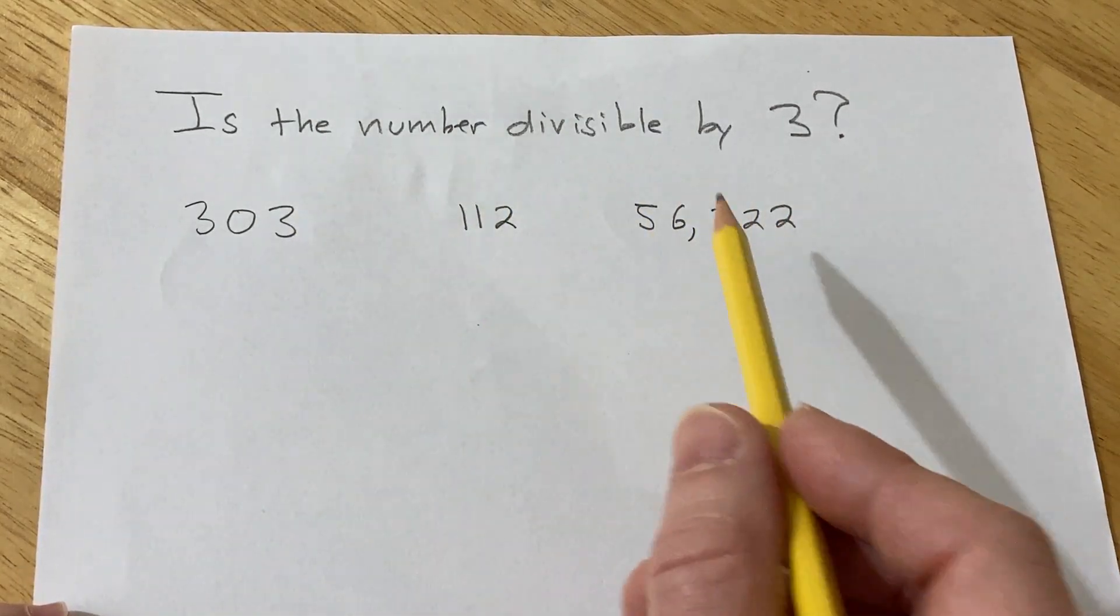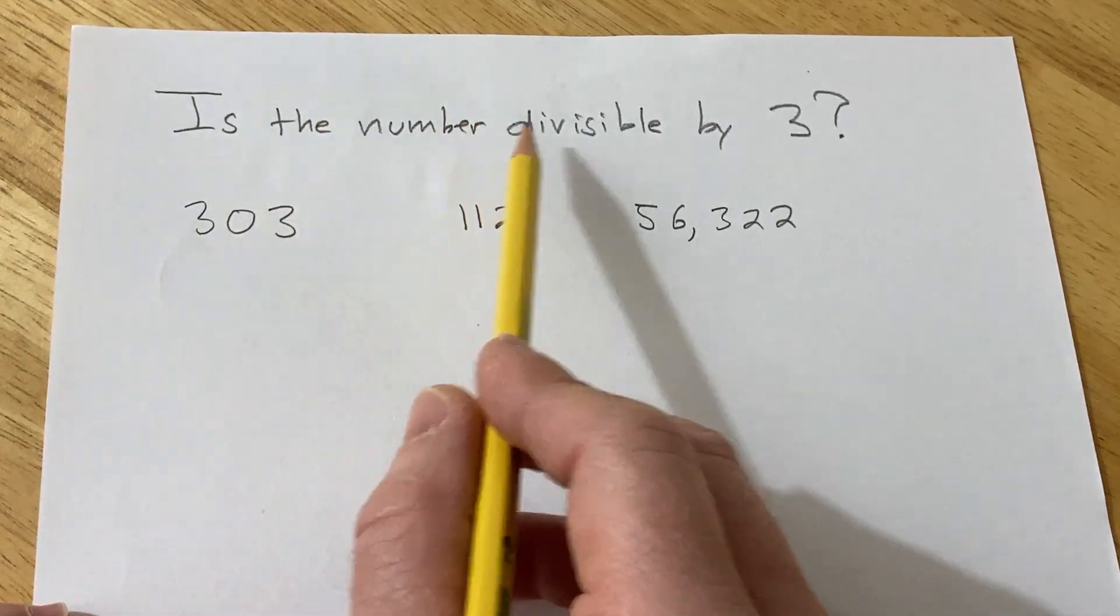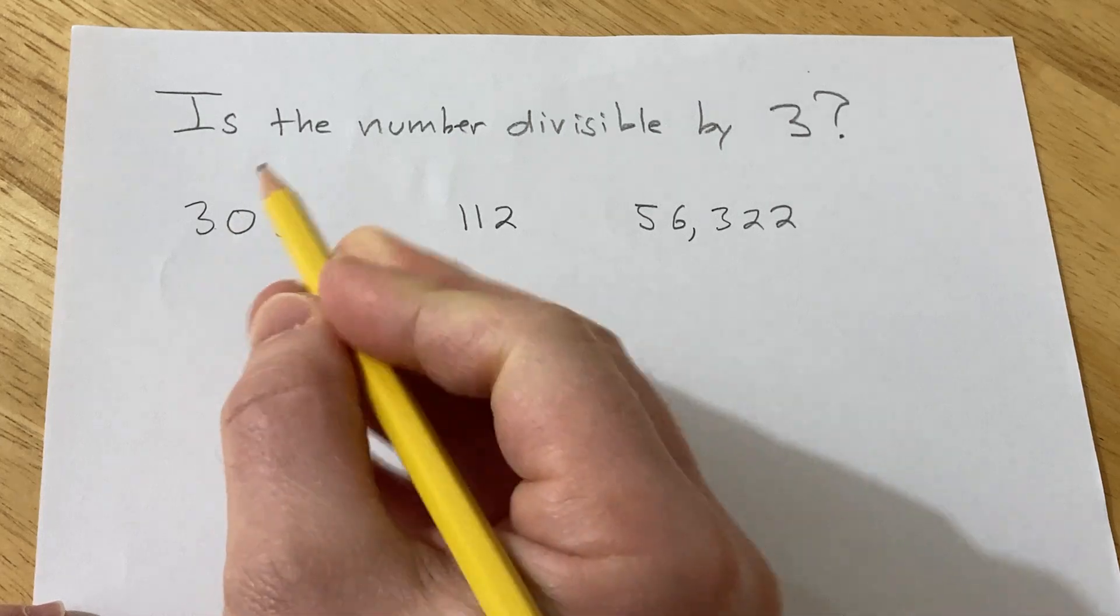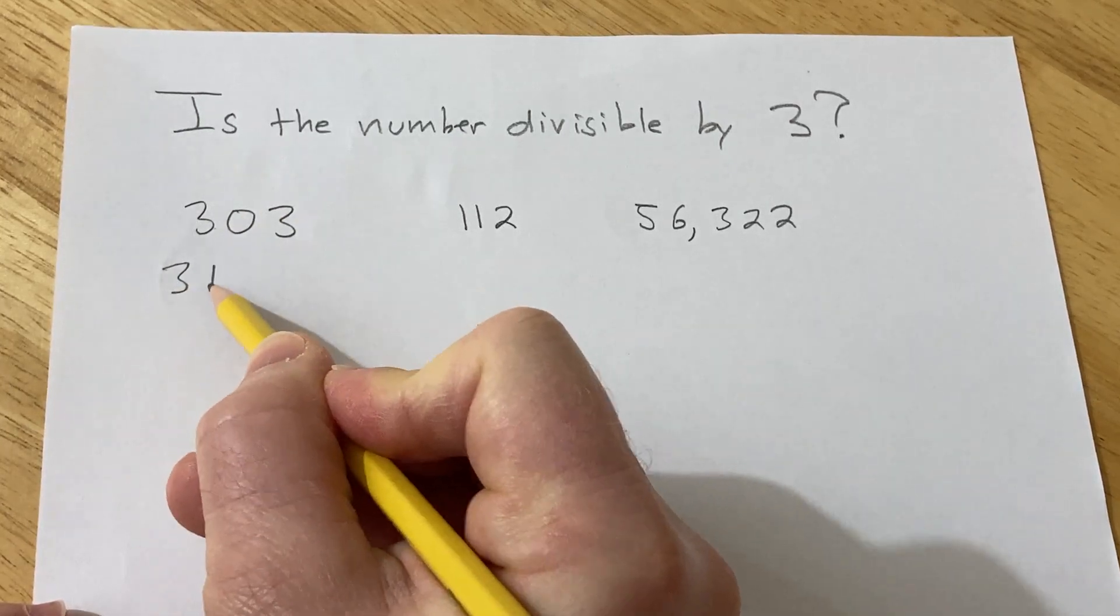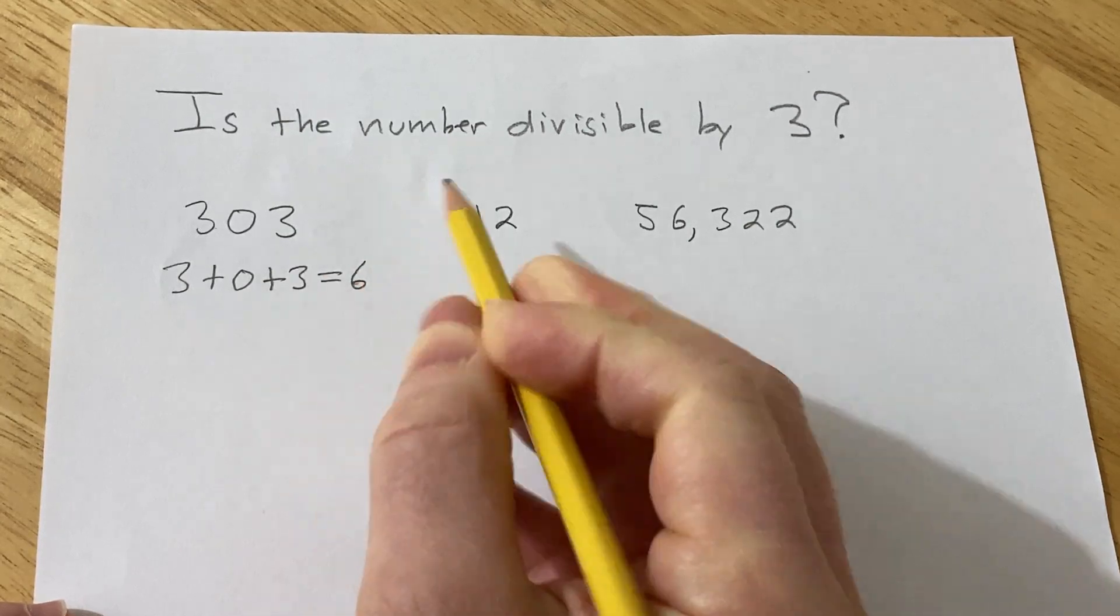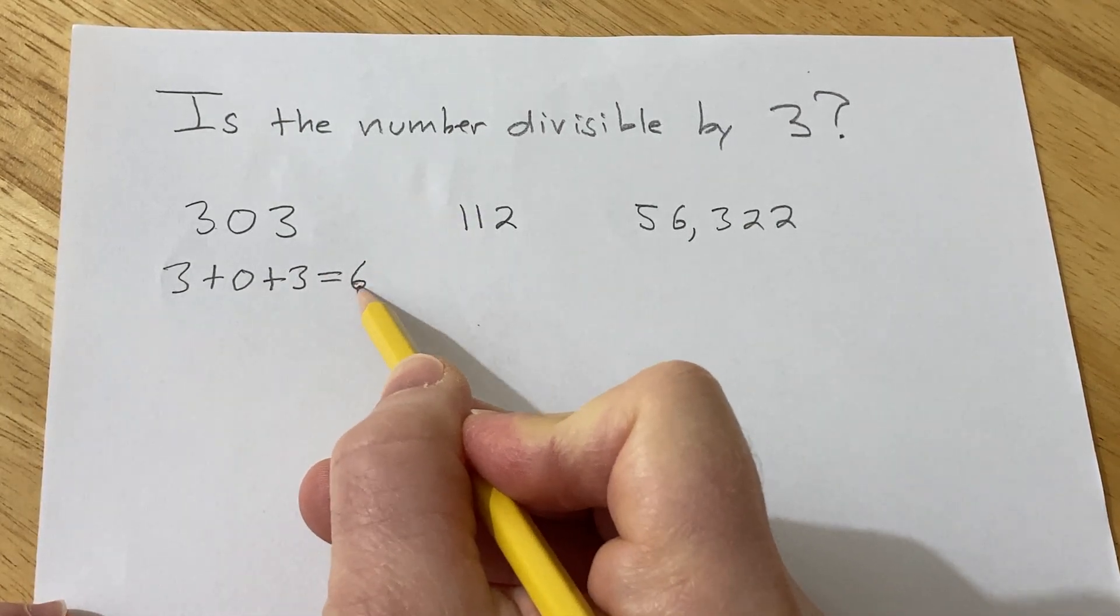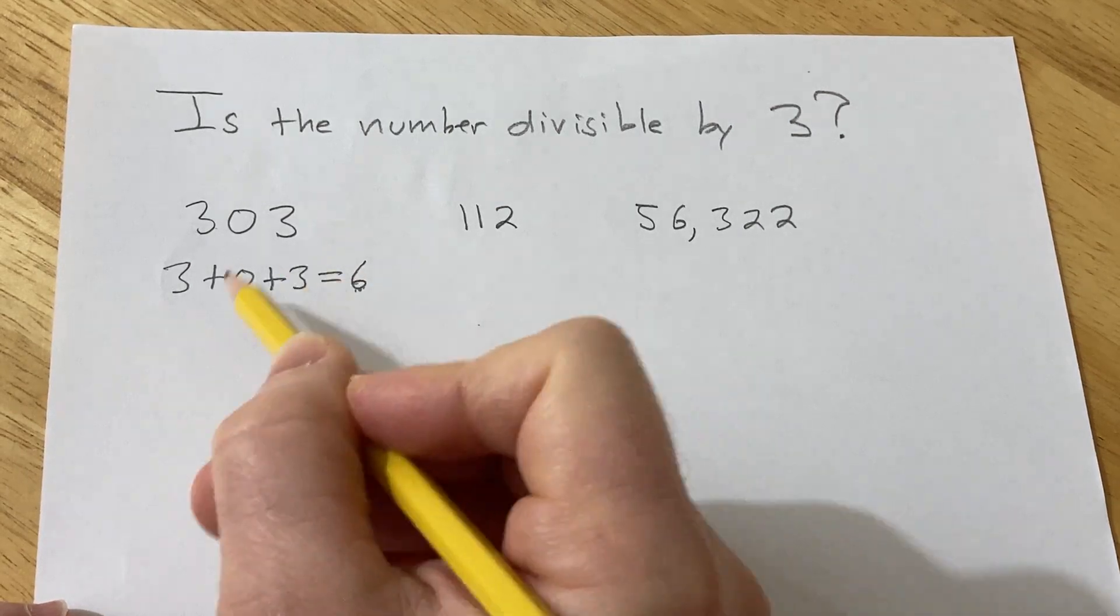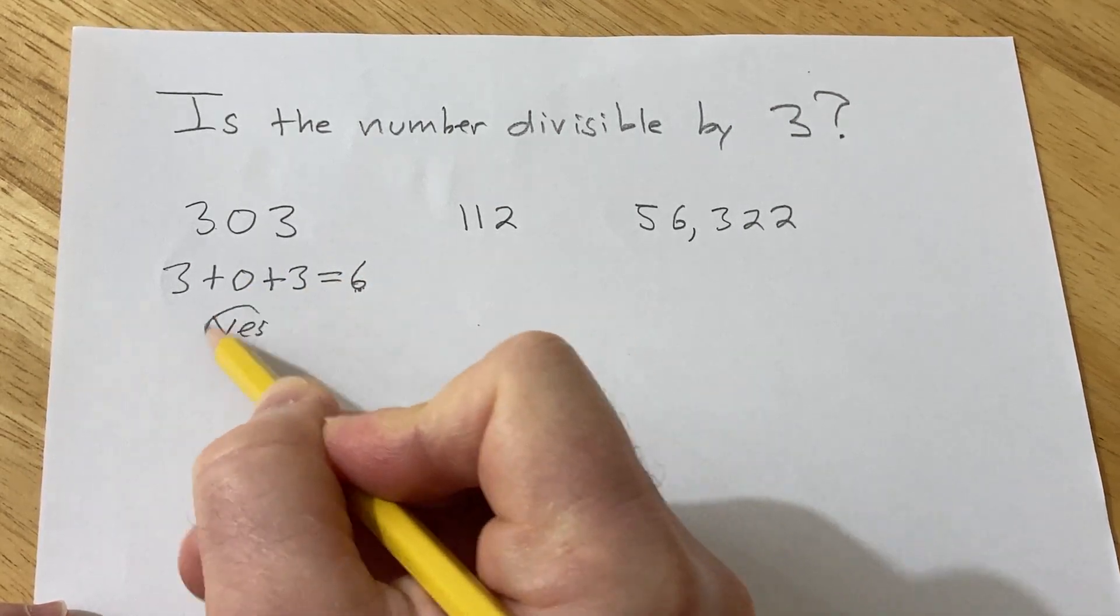So all you have to do to figure out if a number is divisible by 3 is you add up the digits. So for example, let's do this one first. So you would do 3 plus 0 plus 3, so that's equal to 6. So if this is divisible by 3, then so is this. So because 3 goes into 6 2 times, the answer is yes. This is divisible by 3.